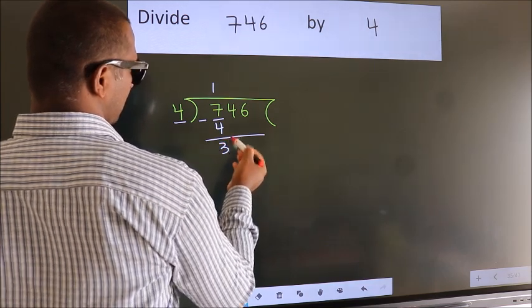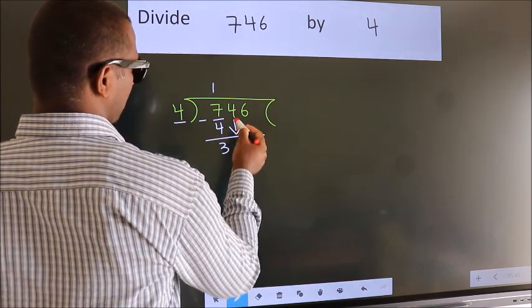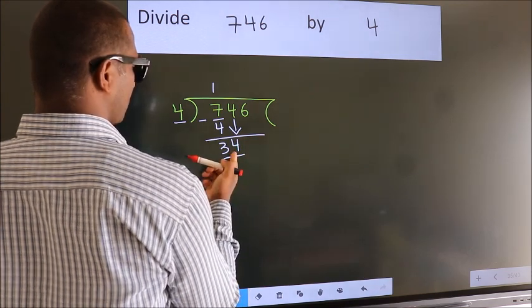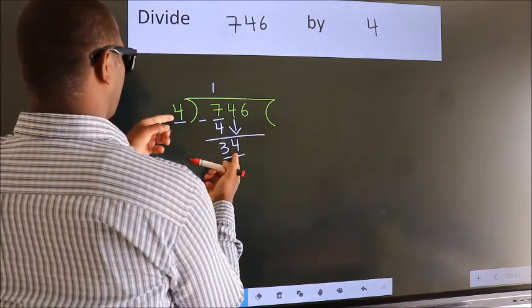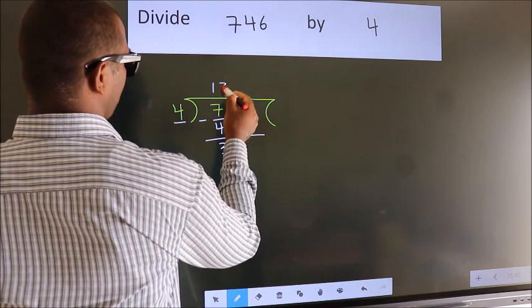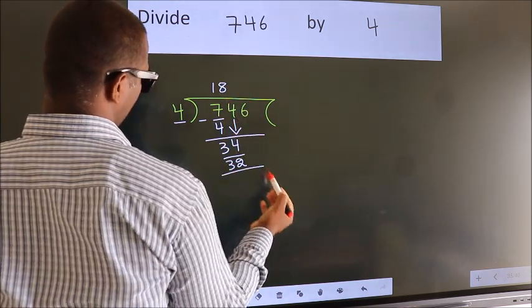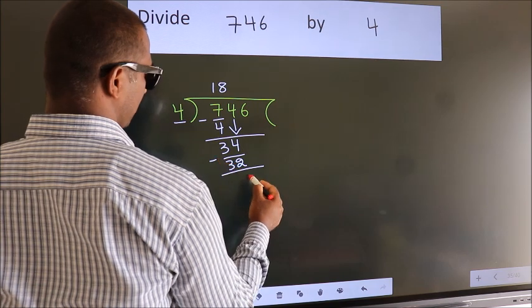After this, bring down the beside number. So 4 down, making 34. A number close to 34 in the 4 times table is 4 times 8, which is 32. Now we subtract. We get 2.